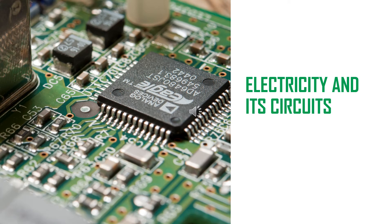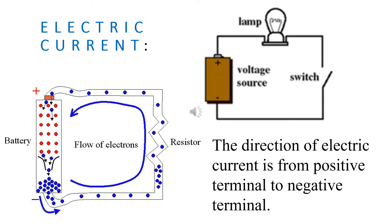In the previous video we have seen the basics of conductors and insulators and also the subatomic particles responsible for the movement of current in an electric circuit, which includes a power supply, a wire, and an appliance like a lamp or a resistor, followed by a switch. If the switch is open, the current will not flow because the circuit is broken — there won't be a continuous flow of electrons.